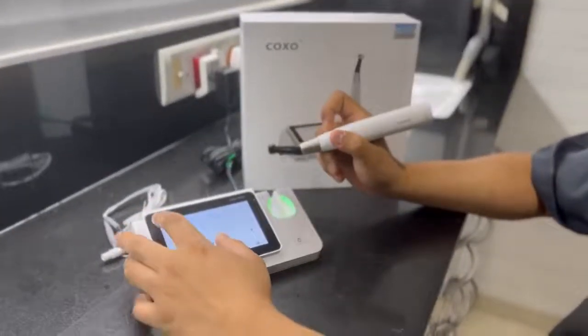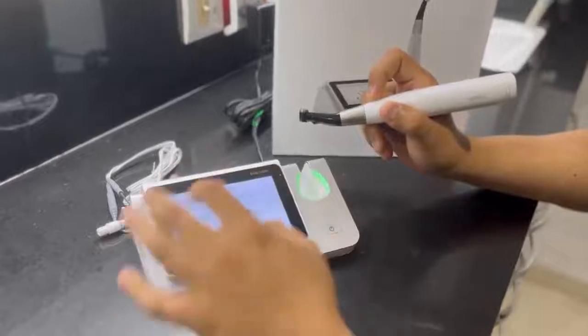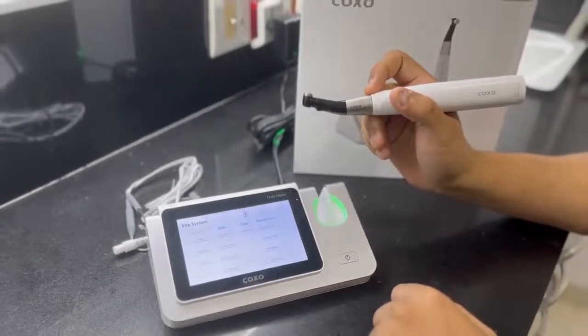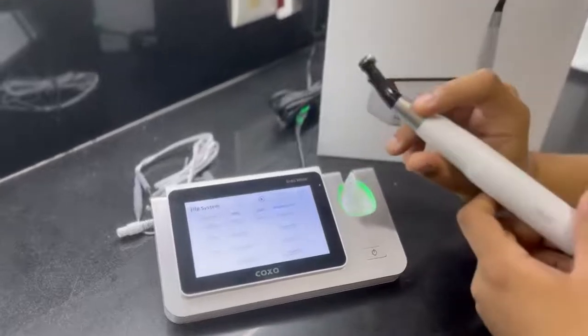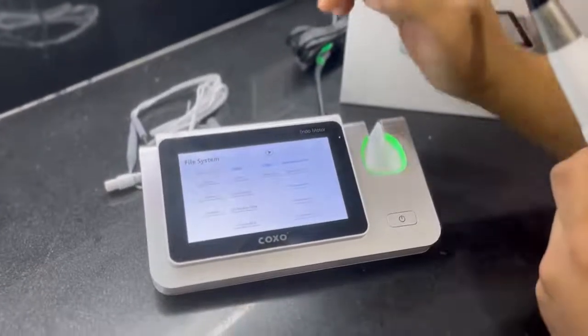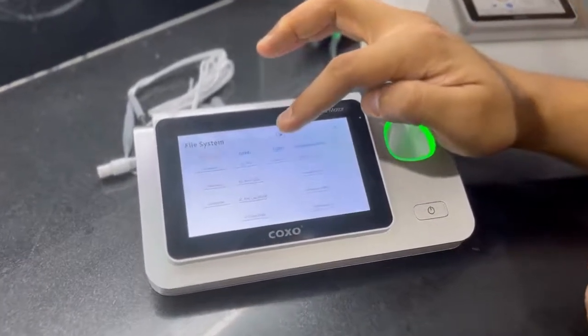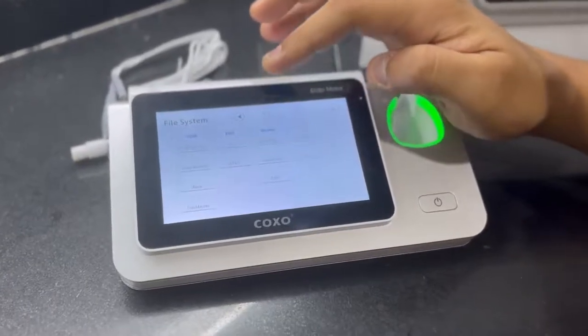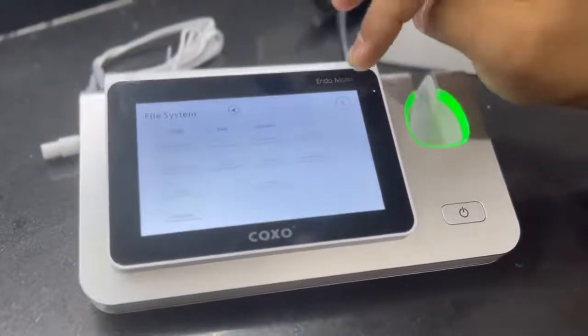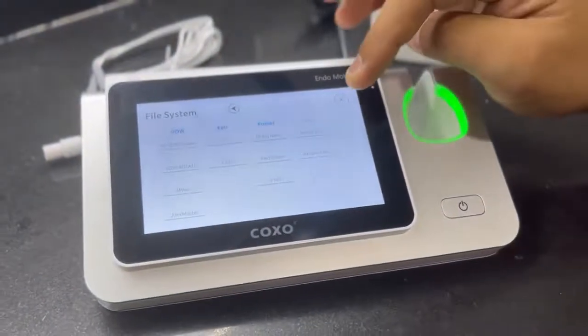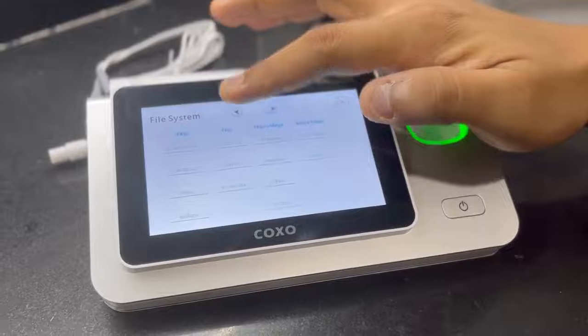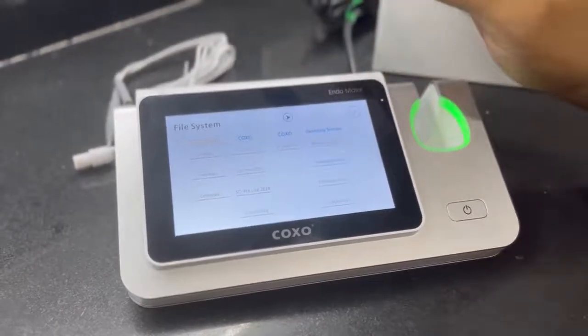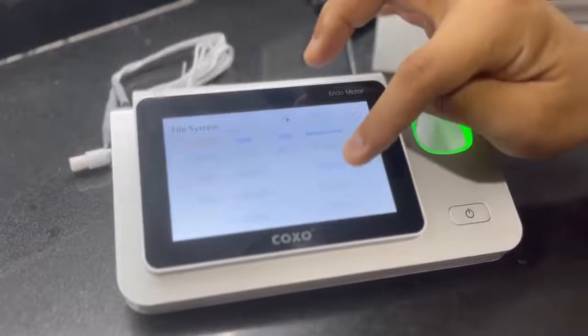So let's have a look at some of the unique features that are there in this device. As you can see, the system supports multiple files. There are presets and programs from companies like Coxo, Dentsply, Sirona, FKG, Micromega, VDW, Kerr, Comet, as well as customized user settings available. So let's look at one of the settings of the file systems that I use, ProTaper Gold.